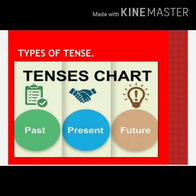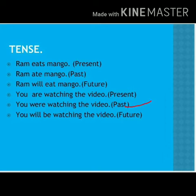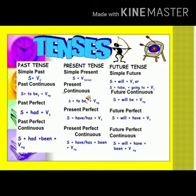Let us have a glance at a few examples. 'Ram eats mango' — 'Ram ate mango' — 'Ram will eat mango.' 'You are watching the video' — 'You were watching the video' — 'You will be watching the video.' These three tenses are divided into four sub-parts each, meaning altogether there are twelve tenses.